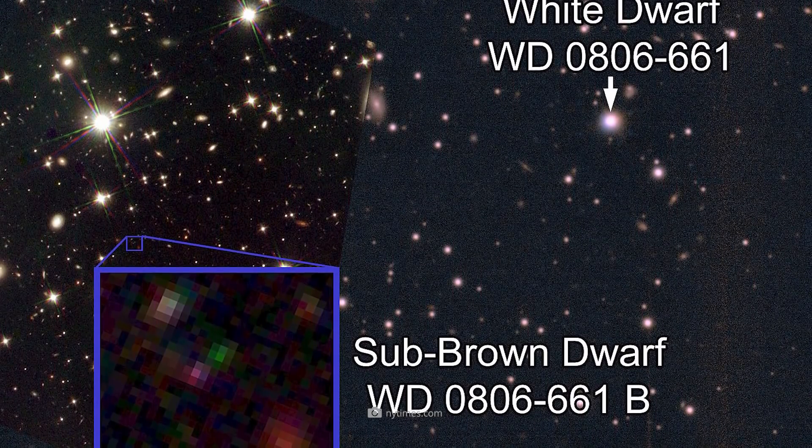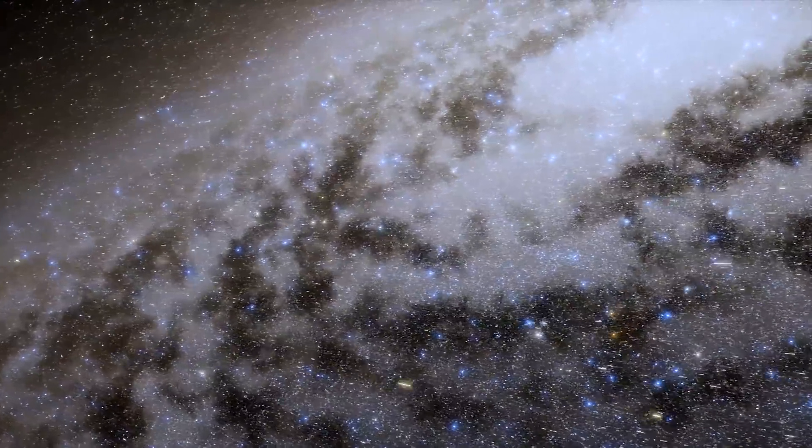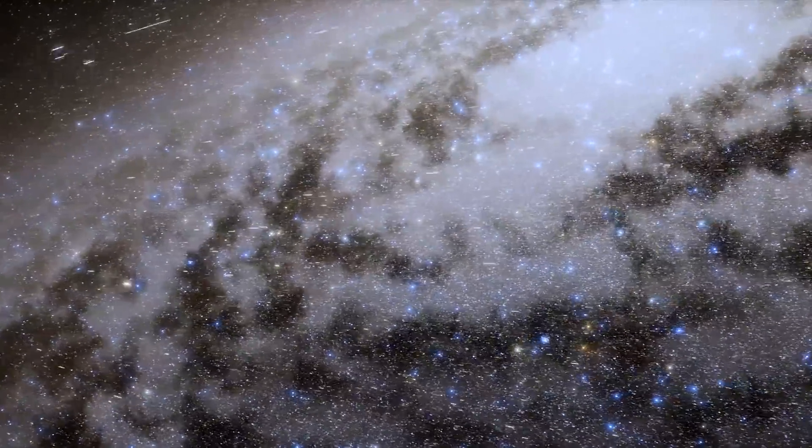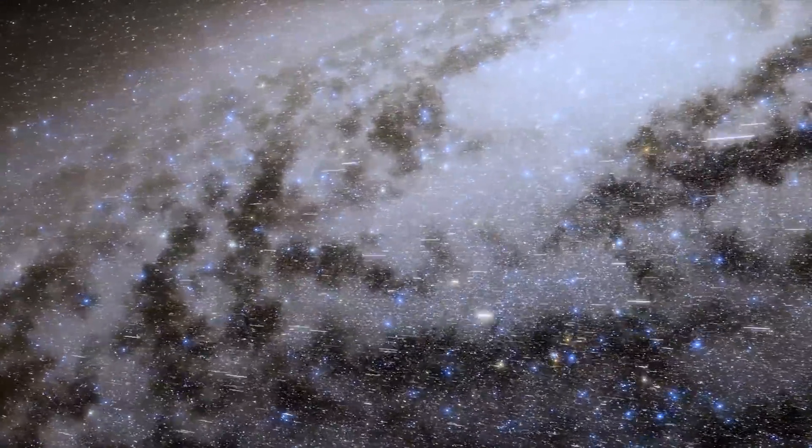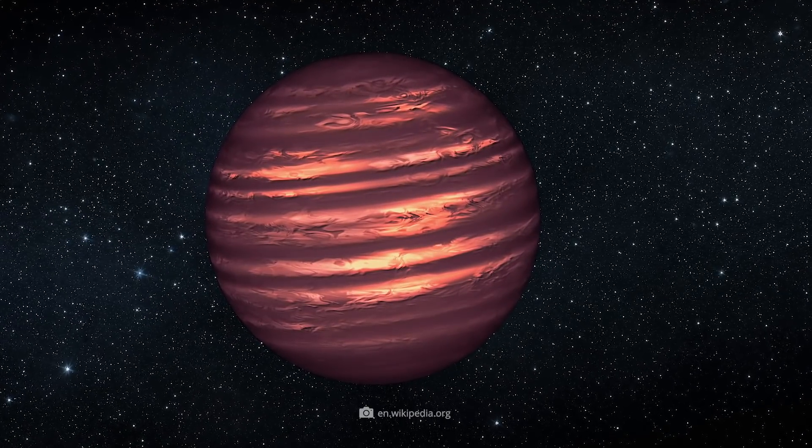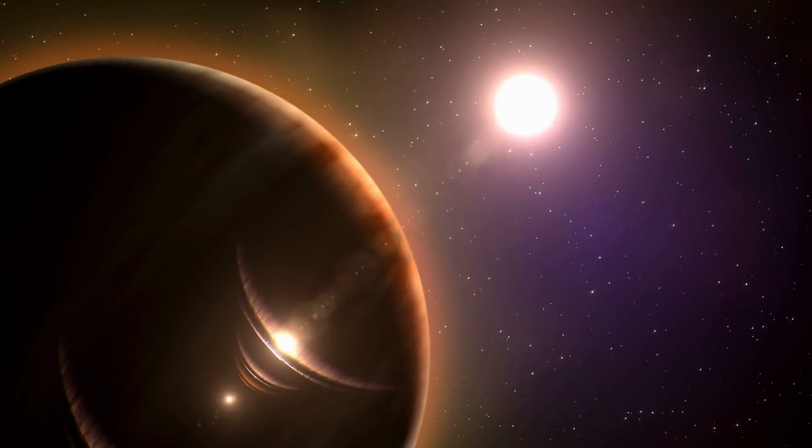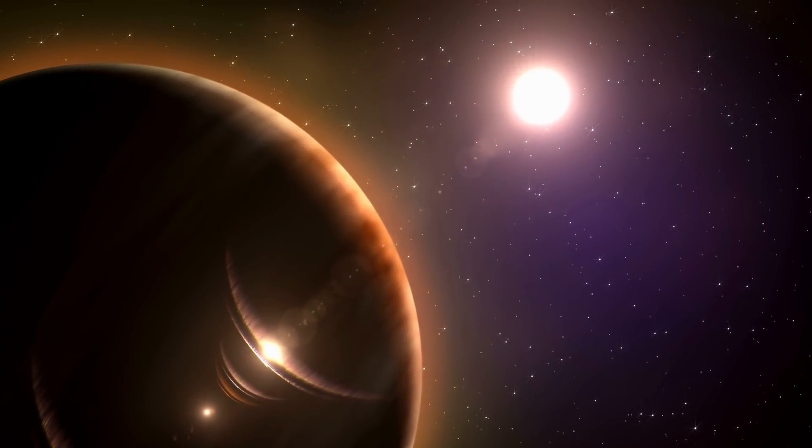It was also the coldest directly imaged substellar structure known to experts at the time. According to the report, the accompanying brown dwarf has a temperature that has been quantified as between just 126 and 172 degrees Fahrenheit.